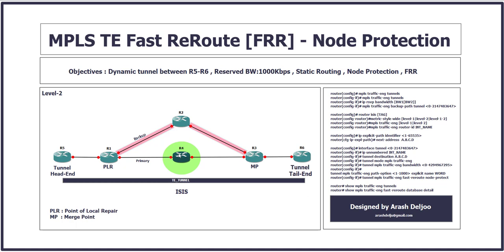When you are protecting one node or one router, at the same time you may be protecting more than four, five, or six links — because all links connected to that node are also protected. Many parts of our discussion about node protection are exactly the same as link protection, but there are some differences in notation that we should notice. It is a requirement for this video that you have already learned about fast reroute link protection, so I will build on that knowledge.